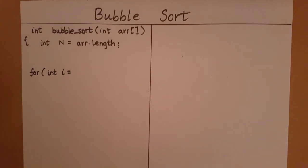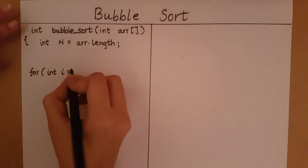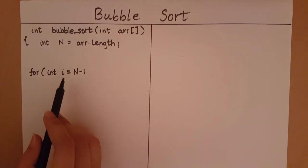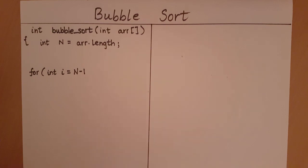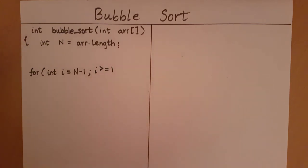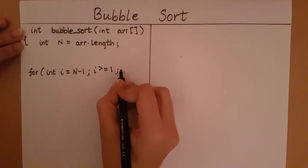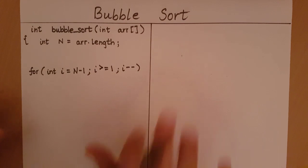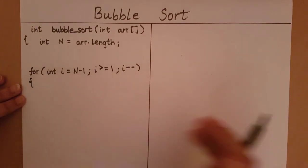Let's create a loop to represent which indexes we are filling with the correct elements. The first index we fill is the last index, which can be represented by n minus one. For an array of five elements, n equals five, so the last index is four, which is n minus one. We stop at index number one — we don't go all the way till the zeroth index. Each time we decrement i, going from the end of the array all the way till index number one, filling each position with the correct element.